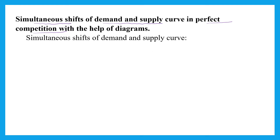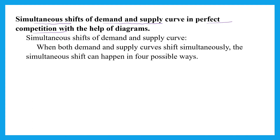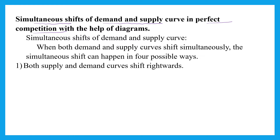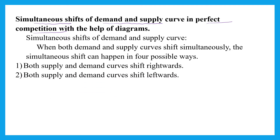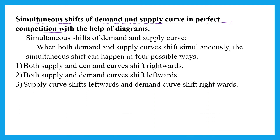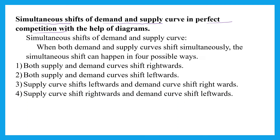There are 4 possibilities of simultaneous shift in demand and supply curve. First one: both demand and supply curve shift rightward. Second one: both supply and demand curve shift leftward. Third possibility: supply curve shifts leftward and demand curve shifts rightward. The fourth one: supply curve shifts rightward and demand curve shifts leftward.